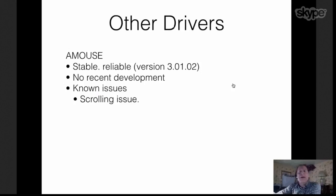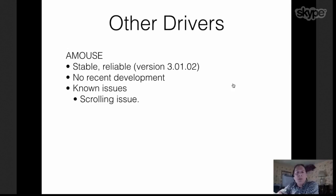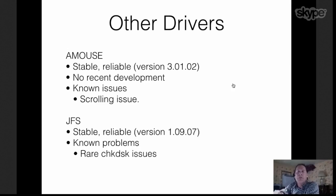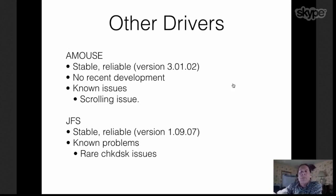No work has been done on AMOUSE. It still is at version 3.1.2 and still has the scrolling issue, but it's pretty stable and reliable — I use it on pretty much every system. JFS has had no work done on it recently either. It's still at version 1.9.7, pretty stable and reliable, and still has the very rare check disk issues — but that's the only known problem with it right now.